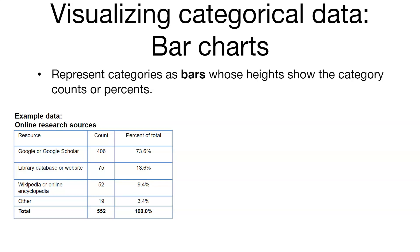Others said library data sets or websites. Others said Wikipedia or some other online encyclopedia. And so to graph that with a bar chart, we do something like this. The number of students is on the y-axis and the categories or the different online research sources are on the x-axis. Now we can see that most students go to Google when they do their online research.